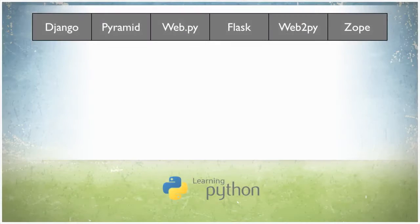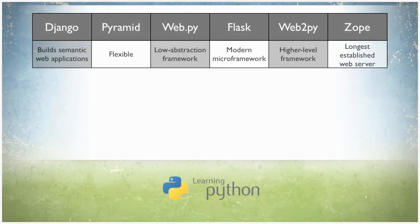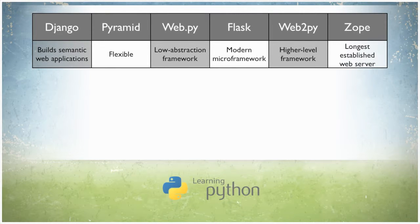The Django framework is the most popular. It builds semantic web applications. Pyramid is another popular Python framework. Web.py is a low abstraction framework — it offers only the essentials for web development.